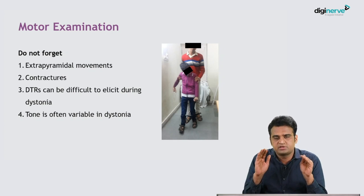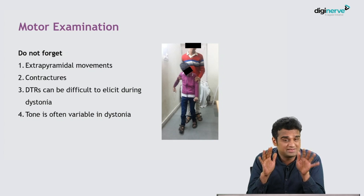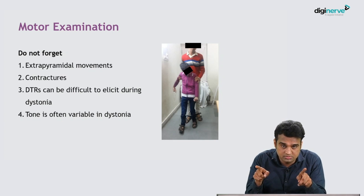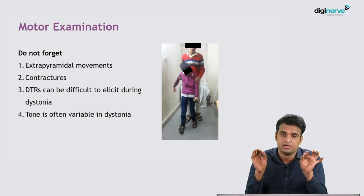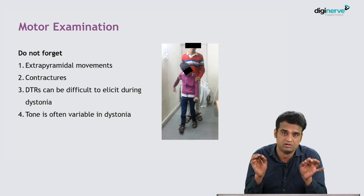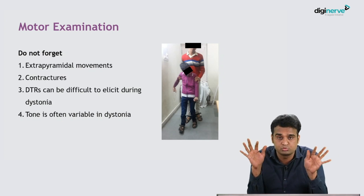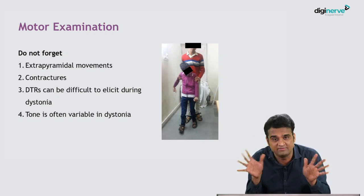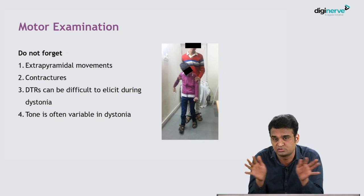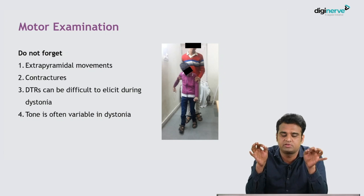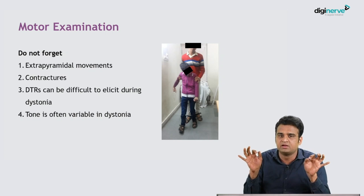When presenting the motor system examination, do not miss extrapyramidal movements — do not miss choreoathetoid movements, dystonias, or contractures; these are very important in children with cerebral palsy. Remember that DTRs can be difficult to elicit during dystonia or in the presence of contractures. Just because DTRs are absent does not mean there is peripheral neuropathy — I have seen students incorrectly conclude peripheral neuropathy in a child with cerebral palsy based solely on absent DTRs.